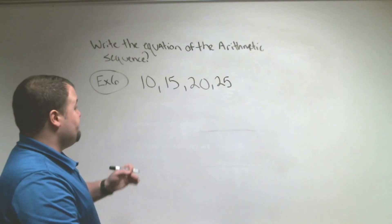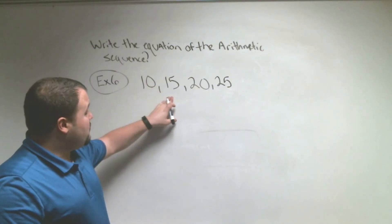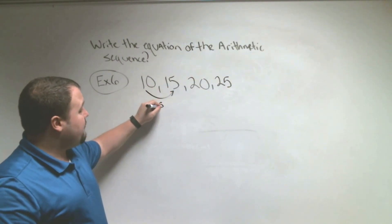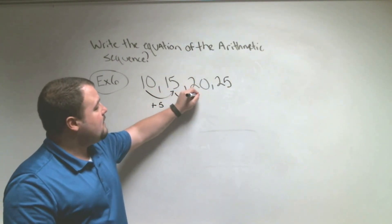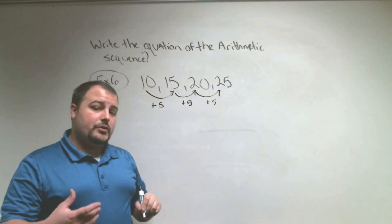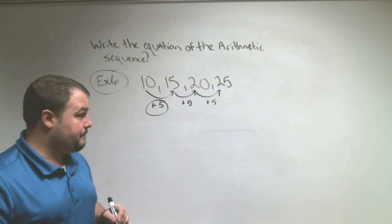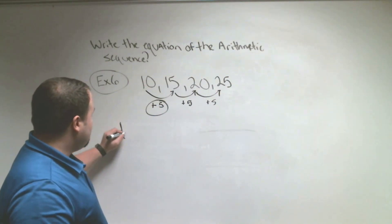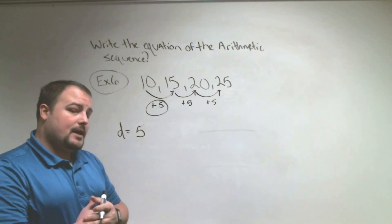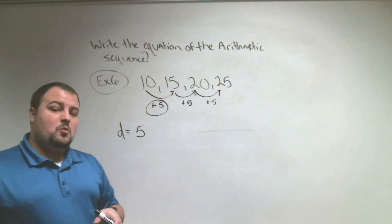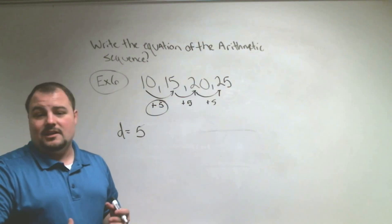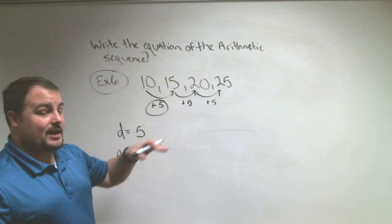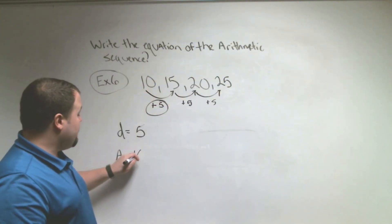We establish how we go from each term — finding the common difference. To go from 10 to 15, we add 5. 15 to 20, still add 5. 20 to 25, we add 5. This tells me the common difference D is 5. Now A1 is the first number in our sequence, which is 10. These are the only two pieces of information you actually need to write an equation: D and A1.